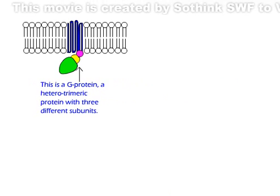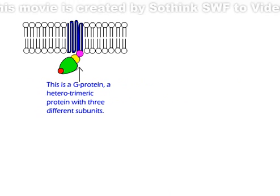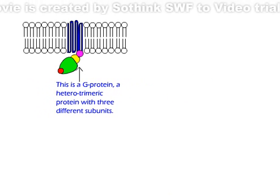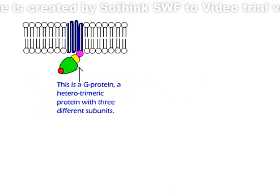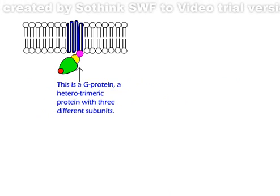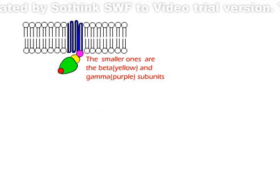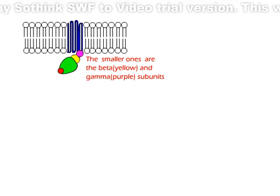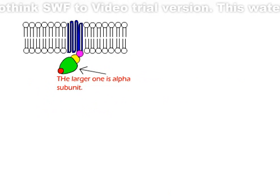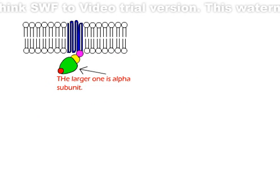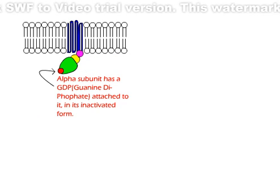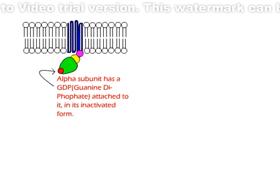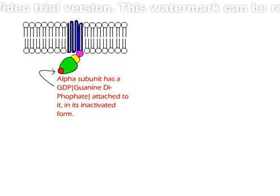This one is a G-protein, a heterotrimeric protein with 3 different subunits: alpha, beta and gamma subunits. The smaller ones shown with yellow and purple color are the beta and the gamma subunits. The larger one shown with green color is the alpha subunit. The alpha subunit has a guanine diphosphate molecule attached to it in its inactivated form.